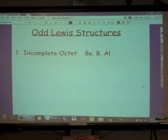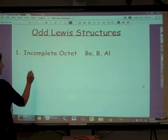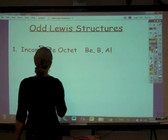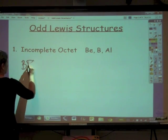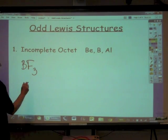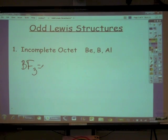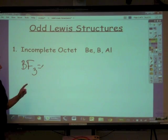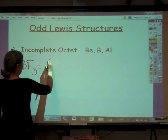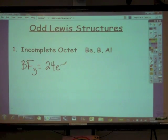So these can be stable without a full eight electrons surrounding them. So for instance, let's look at boron trifluoride, BF3. So boron has three valence electrons and fluorine has seven valence electrons and we have three fluorine. So that means we've got three plus twenty-one. So that means that we've got twenty-four electrons that we need to account for in this compound.